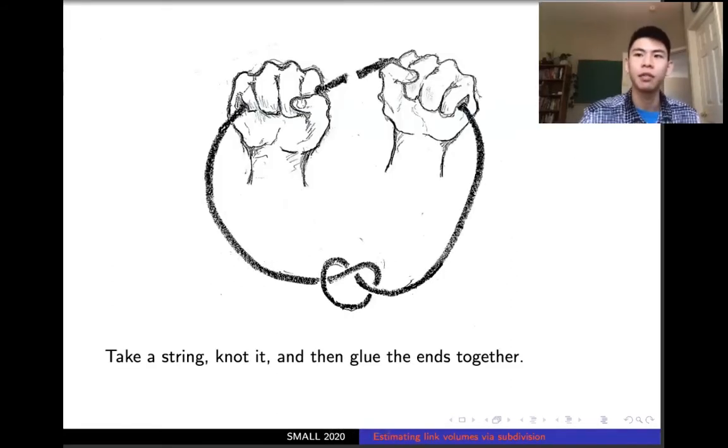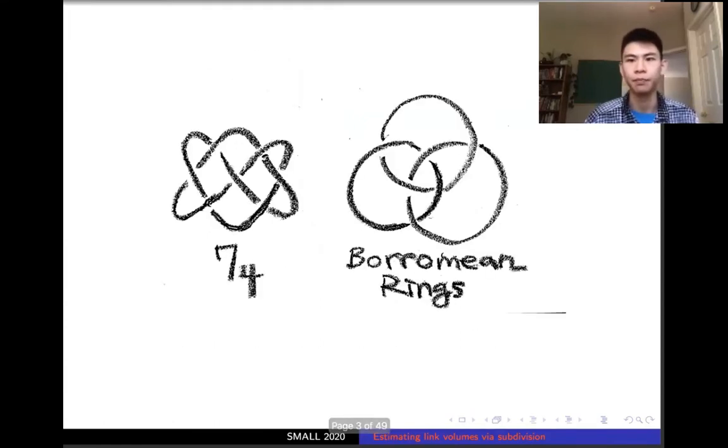To begin, let me give a very brief introduction to knot theory. We can picture a knot as a string that we put a knot into and then glue the ends together. Let's look at an example. On the left here is the 7-4 knot. It's a knot that displays beautiful symmetries, hence it's a widely admired Buddhist symbol.